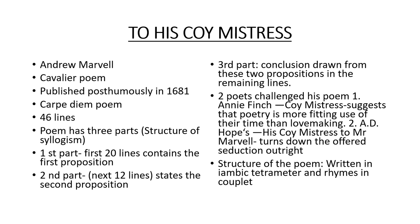To His Coy Mistress by Andrew Marvell is a cavalier poem, posthumously published in 1681. It follows the carpe diem philosophy and has 46 lines. The poem has three parts structured as a syllogism: the first 20 lines contain the first proposition, the next 12 lines state the second proposition, and the remaining lines form the conclusion. Two poets challenge this poem: Annie Finch's poem The Coy Mistress suggests poetry is a more fitting use of their time than lovemaking, and Edna Hoff's Kiss Coy Mistress to Mr. Marvell turns down the offered seduction outright. The poem is written in iambic parameter and rhymes in couplets.